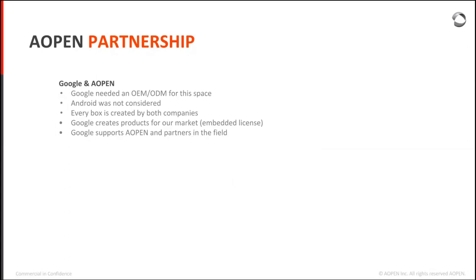When Google made these goals for the enterprise and commercial space, they were really looking for an OEM/ODM partner with experience in the space, and AOpen was a perfect fit. Android was not considered — Google could have asked us to make commercial-grade Android devices, but at the time Google had already found a lot of success with Chrome OS in the education space and wanted to extend that success to other markets.